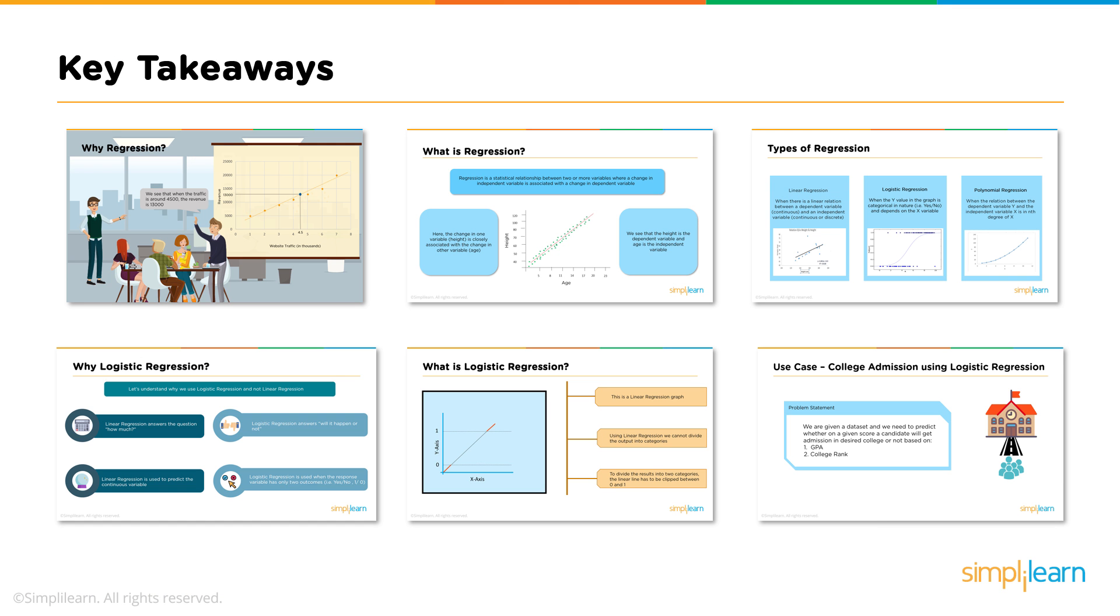So what are the key takeaways? We've learned why we use regression, what regression is, and some of the various types of regression. We also learned why we would use logistic regression. It is a binary classifier, and it's very good at that in general. Are there other binary classifiers? Sure, but logistic regression is easy to understand and easy to implement. And sometimes it's the first choice what logistic regression is as opposed to linear regression and other types. And then we used our college admission problem as a use case and used logistic regression to answer our questions.